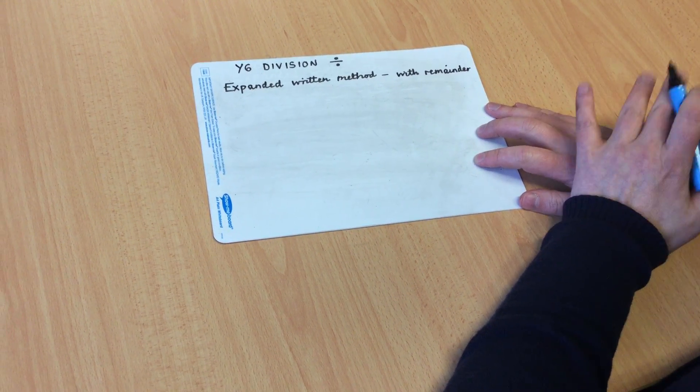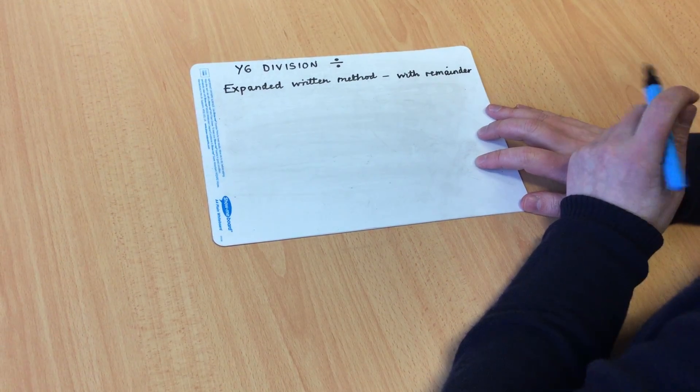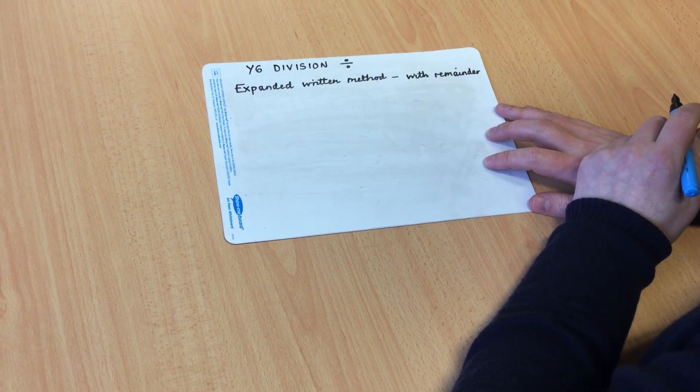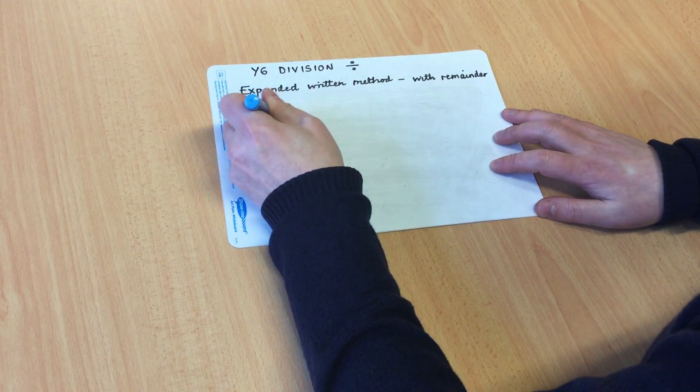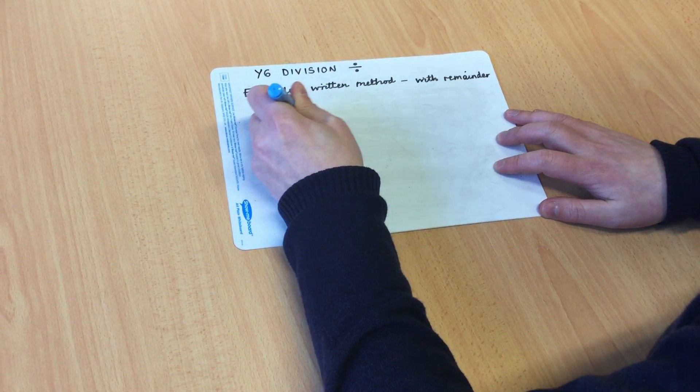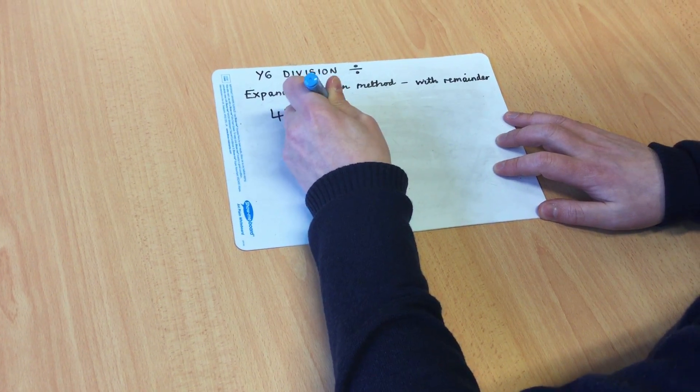So this is Year 6 division, looking at the expanded written method, this time with a remainder. Our example this time is 432 divided by 15.